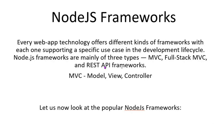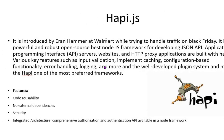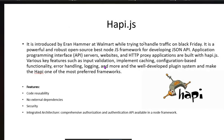There are five popular Node.js frameworks we will discuss today. The first is Hapi.js, introduced by Aaron Hammer at Walmart while trying to handle traffic on Black Friday. It is a powerful and robust open source Node.js framework for developing JSON APIs. It can be used to build API servers, websites, and HTTP proxy applications.